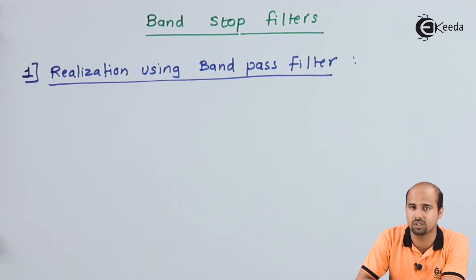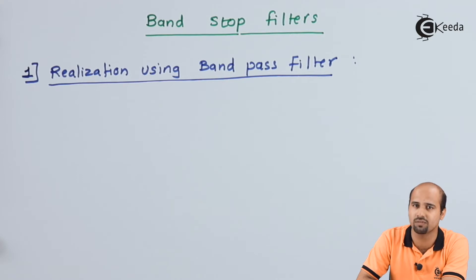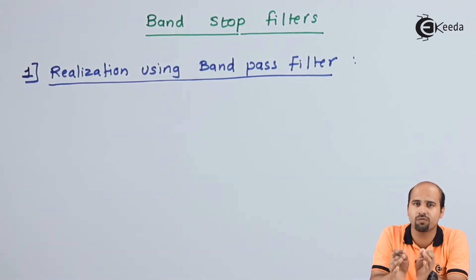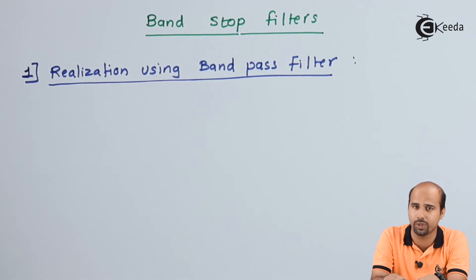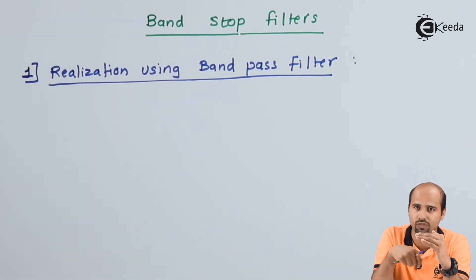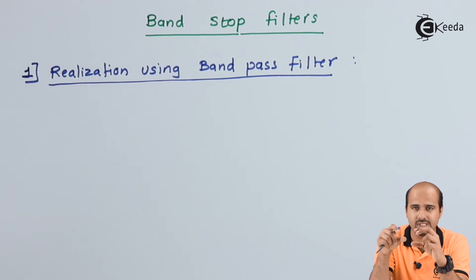In the last video session we learned about the band pass filter. In a band pass filter, we apply only those signal frequencies in which we are interested. For example, if I want to send signals of frequencies 100 Hz to 1 kHz, only those frequencies are allowed to pass and the rest are attenuated. Let's see how it works.